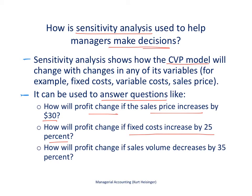Or how will profit change if sales volume decreases by 30%? That is, the number of units we produce and sell goes down. How will that impact the bottom line? I'll give you a formal way to take a look at this on the next slide.